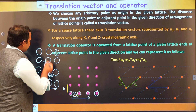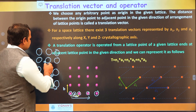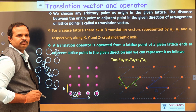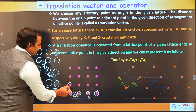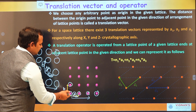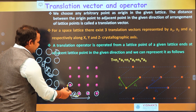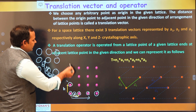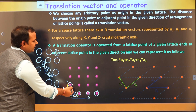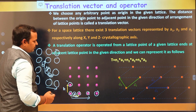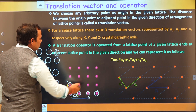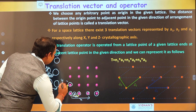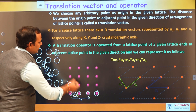Now let us consider another direction — the y-direction. The distance between successive atoms in this y-direction is B. We place another point in space at a distance B, which is the translational vector in this direction. By repeating B using the translational operator, and operating both A and B in x and y directions with periodicity A and B, we obtain all other points.